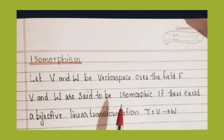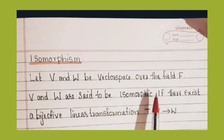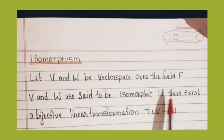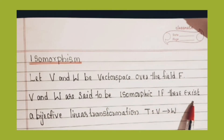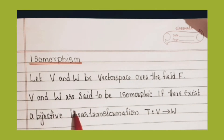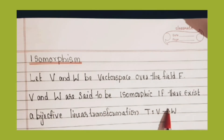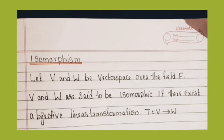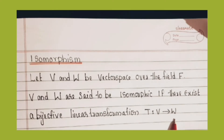Isomorphism: Let V and W be vector spaces over the field F. V and W are said to be isomorphic if there exists a bijective linear transformation T from V to W.